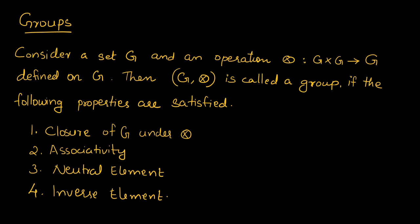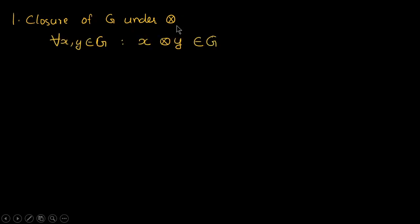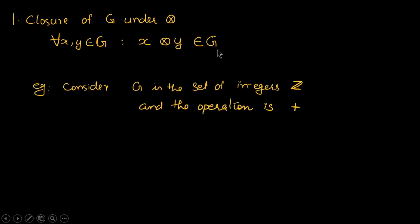Now we can see the properties one by one. The closure of G under the star operation — the star can be anything, it can be plus, multiplication, division, or any operation. The general notation is like this, and the definition says that for all X, Y belonging to G, if we apply X star Y, the answer will also belong to G. Consider G is the set of integers, represented as Z, and the operation is plus, that is addition.